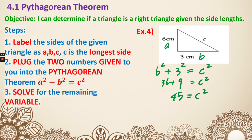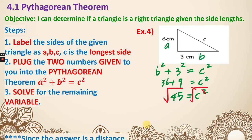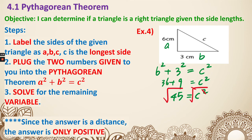Step three: solve for the remaining variable. In order to get rid of the square, we take the square root of both sides. Our answer is always positive because we're talking about distance. If you type square root of 45 into your calculator, you get C equals 6.71. Don't forget the unit — centimeter.